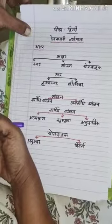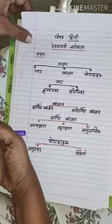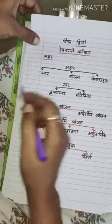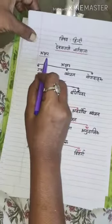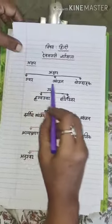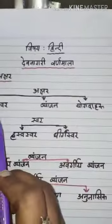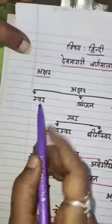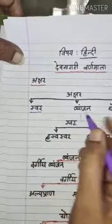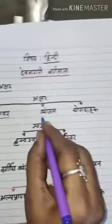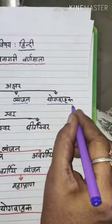It is called in Hindi Devanagari Varnamala. So in Akshar there are three types: Swar, Venjan, and Yoga Vahak.